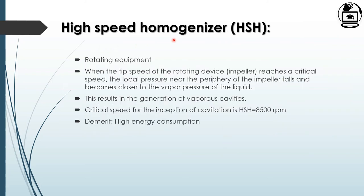The high speed homogenizer is a rotating equipment. When the tank speed of the rotating device or impeller reaches a critical speed, the local pressure near the periphery of the impeller falls to near the vapor pressure of the liquid, and cavity formation starts. The critical speed for inception of cavitation is 8,500 rpm. A disadvantage of this homogenizer is high energy consumption.